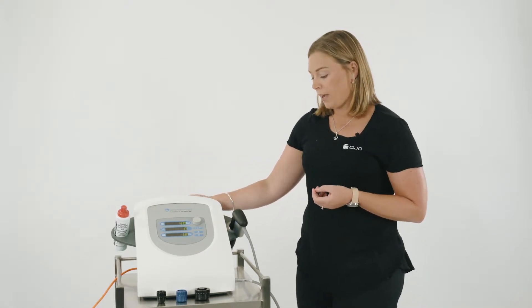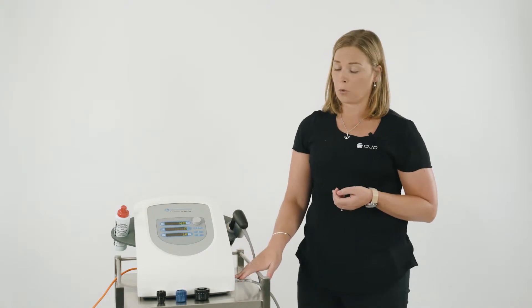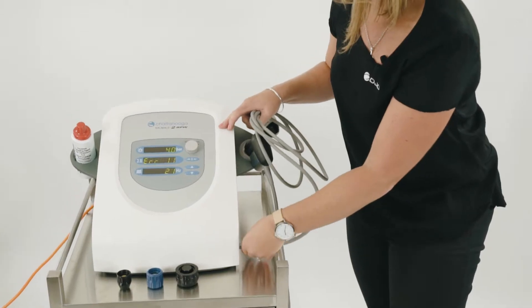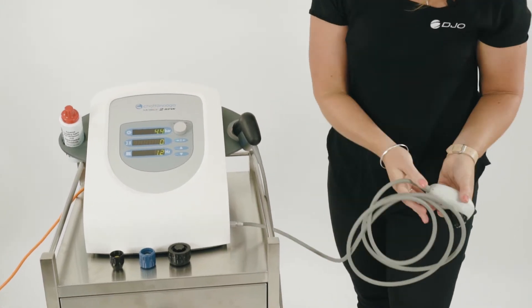The features of the Mobile 2 RPW are definitely how lightweight it is and easy to move around. You have the ability to plug in a second handpiece, although you have one handpiece port. Simply unplug and re-plug your other handpiece, which would be the V-actor.